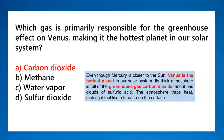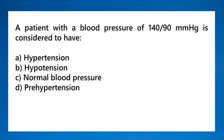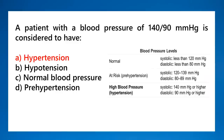A patient with a blood pressure of 140/90 mmHg is considered to have hypertension — that is high blood pressure. The top number (systolic) is 140 and the bottom number (diastolic) is 90. A reading of 140 over 90 indicates hypertension.